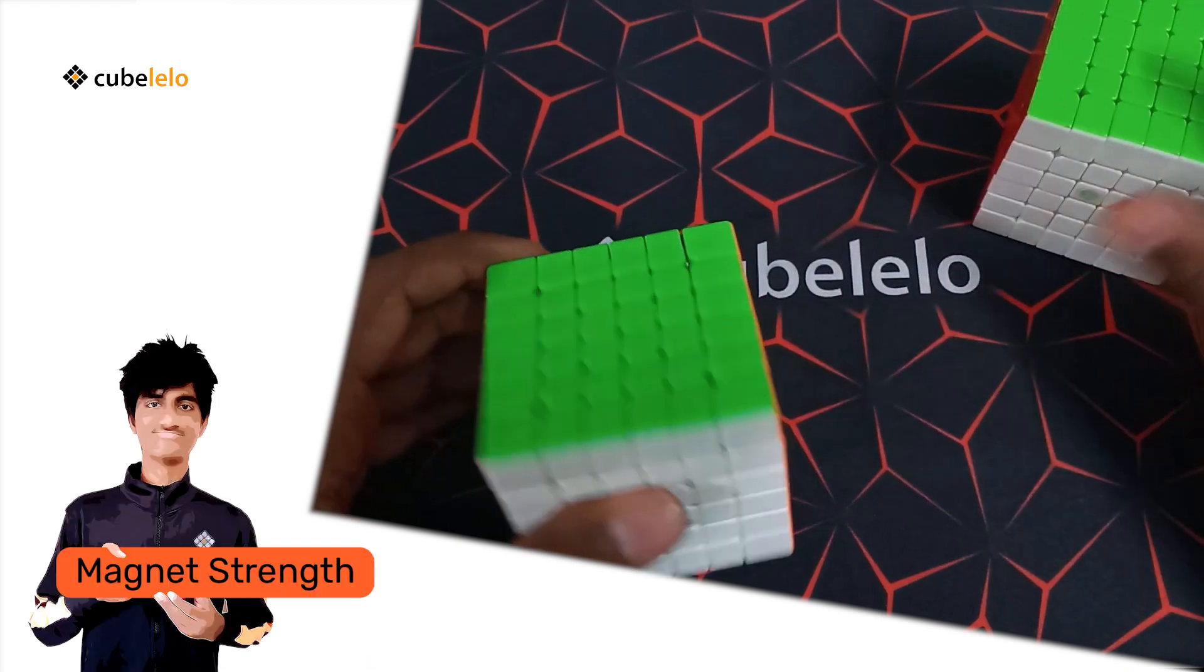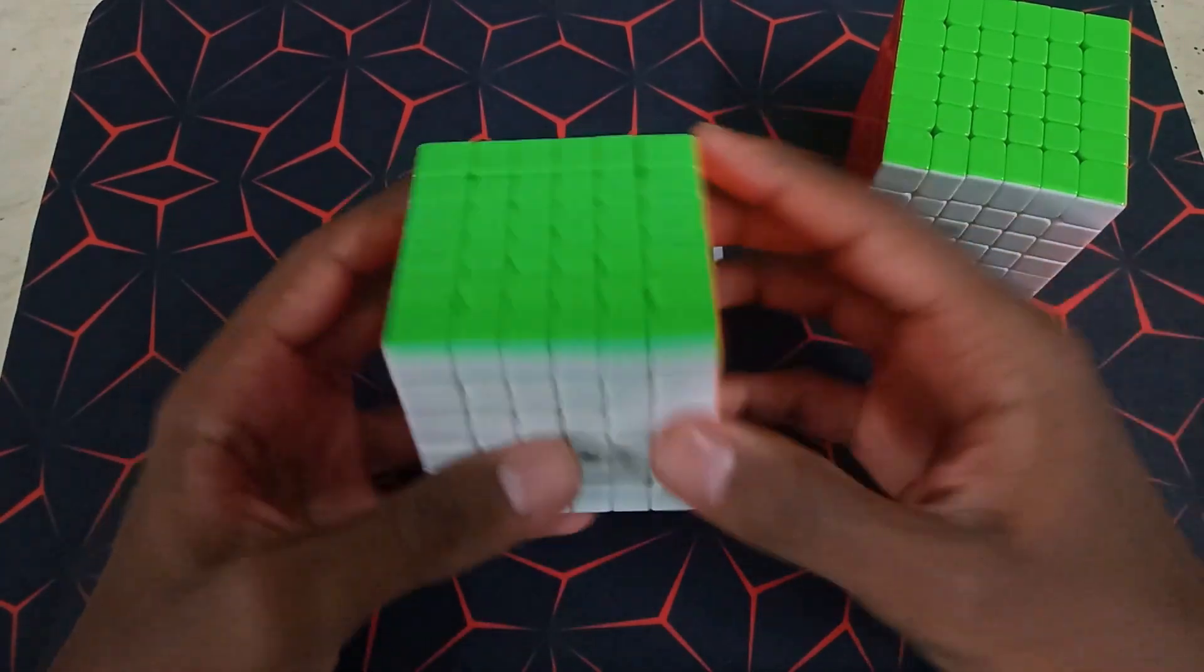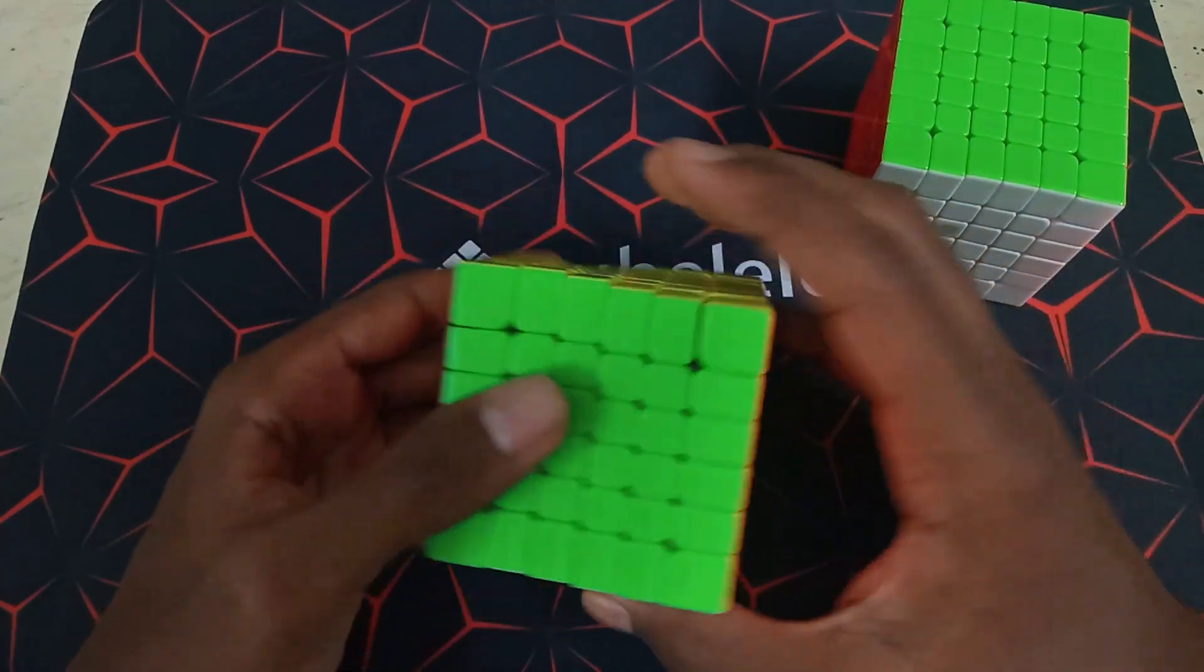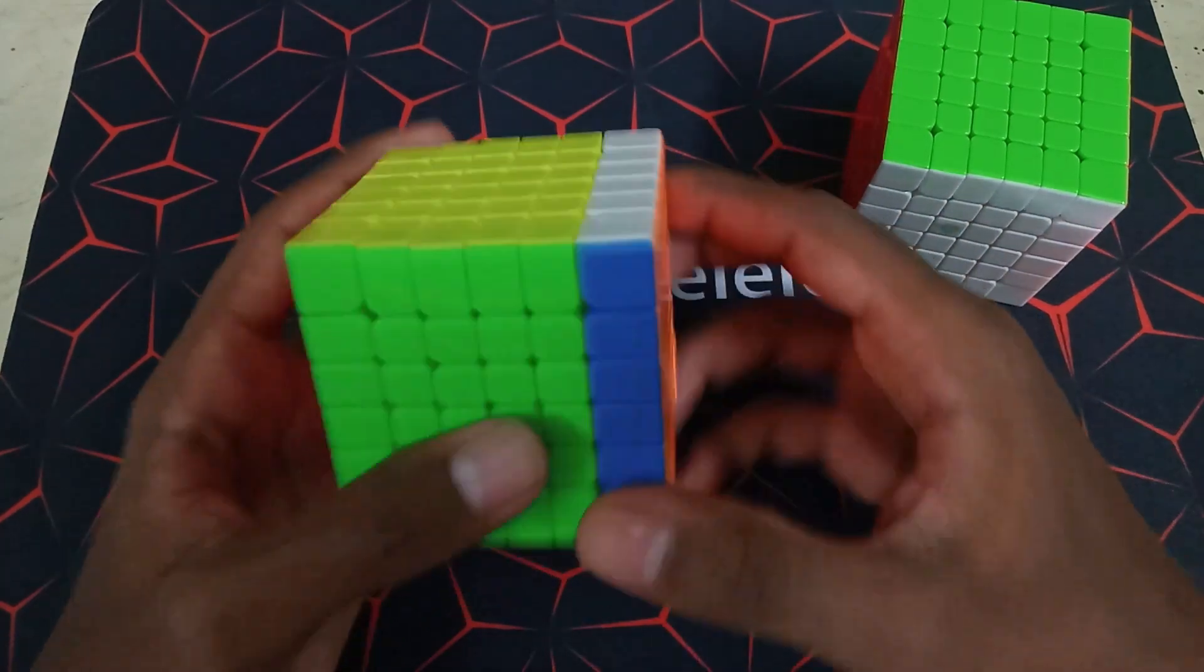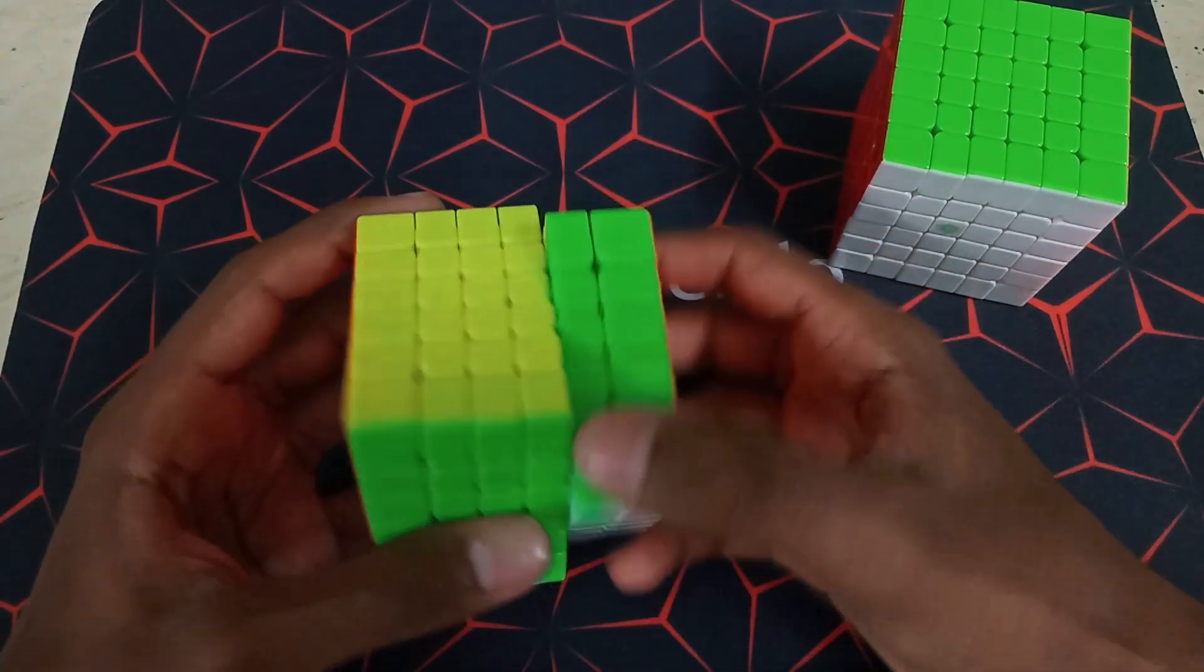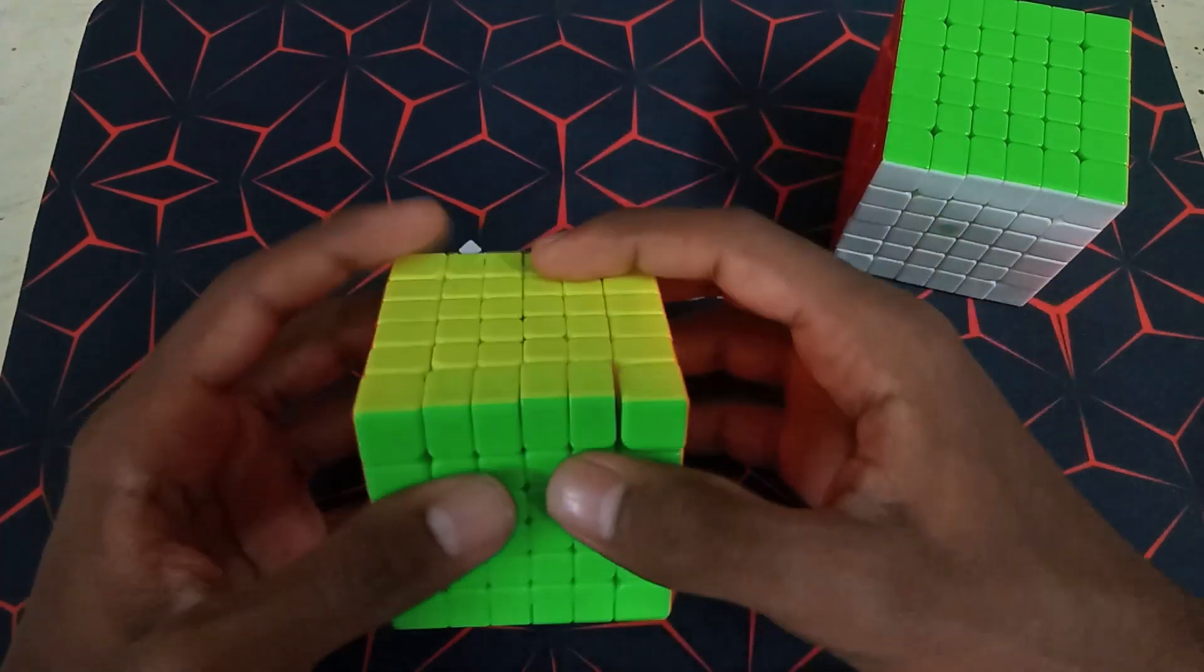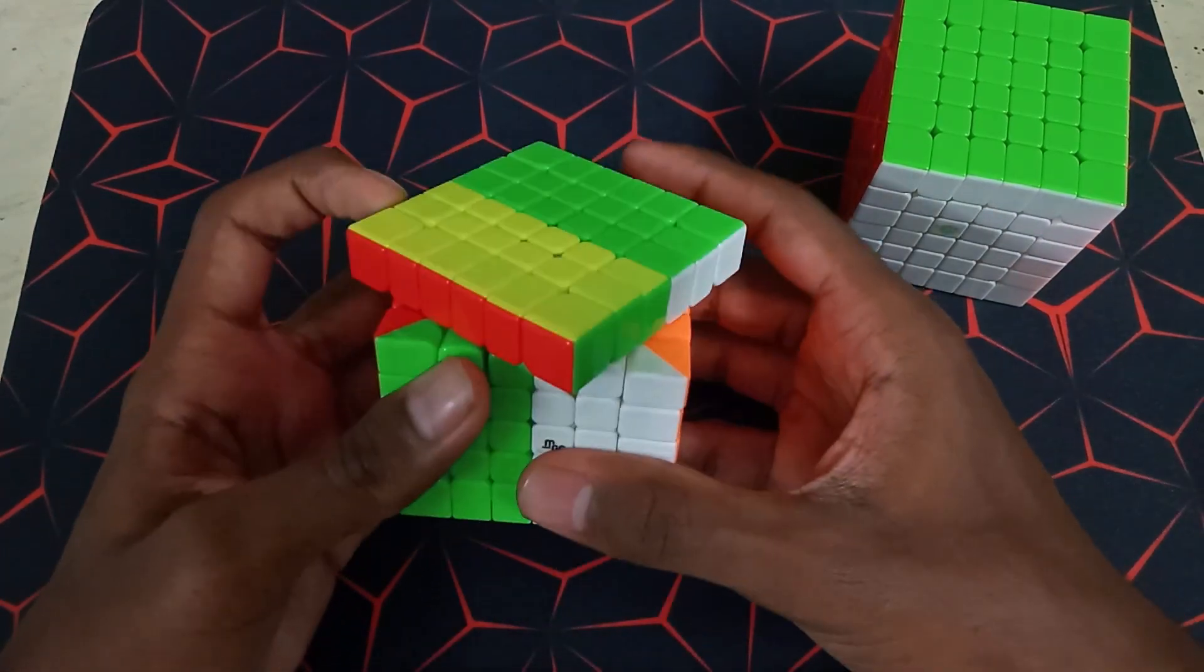So now that we're done with corner cutting, let's look at the magnetic strengths, which is a very important aspect, especially for magnetic puzzles like these. The magnetic strengths of the MGC are average, like they're not too strong, except the internal layers are quite strong compared to the outer layers. The outer layers have pretty normal magnets, not very strong at all. In fact, you cannot even notice them until you slowly turn. However, the inner layers, you can notice it on every single turn, especially the complete middle layers like these ones.